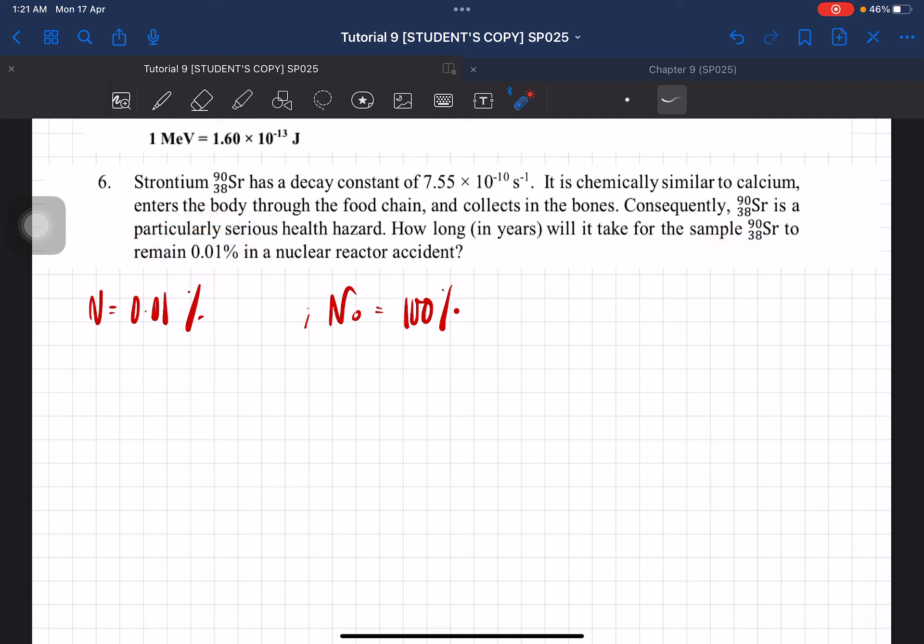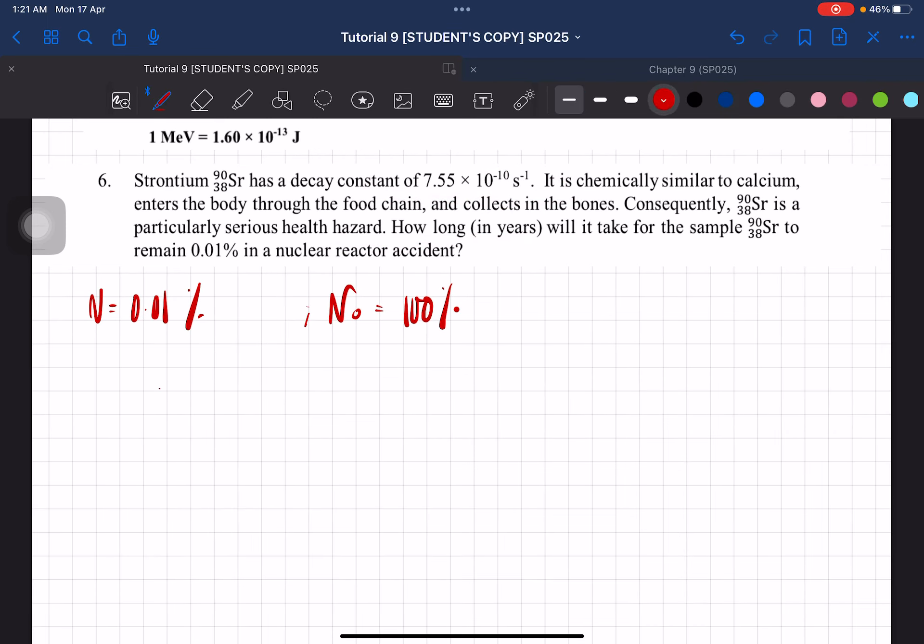And then for this one, we are looking for the time, how long. And then this will give us the decay constant. So we are gonna use N equals N0 e to the negative lambda t.